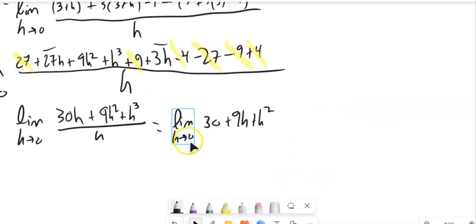So as h goes to 0, this term goes to 0, this term goes to 0. So it just leaves me 30. So it looks like my answer is 30.